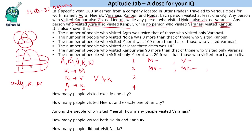Varanasi and Kanpur is not possible — they cannot visit together. Varanasi and Noida: Noida requires Varanasi, which is already included, so Varanasi and Noida is a valid possibility. Kanpur and Noida: Kanpur requires Meerut and Noida requires Varanasi, adding extra cities, so not possible.